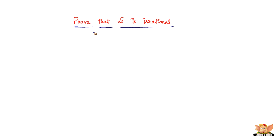In this video, let us prove that √2 is irrational. Before we get into the proving part, let us quickly see what an irrational number is. An irrational number is something that cannot be represented in the form of a fraction, that is a/b. So now, we are going to assume that √2 is rational and prove that it is not rational, which automatically proves √2 is irrational.